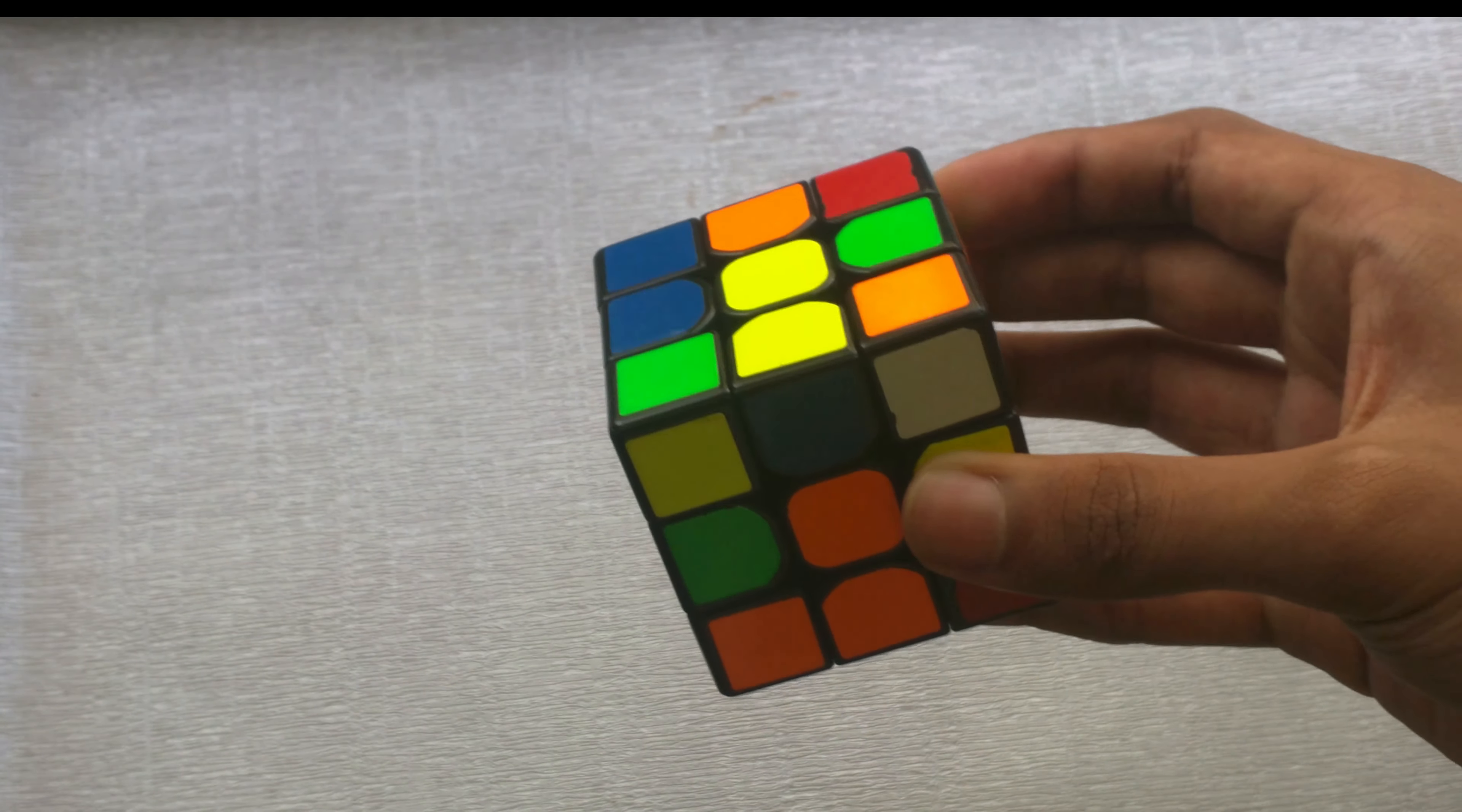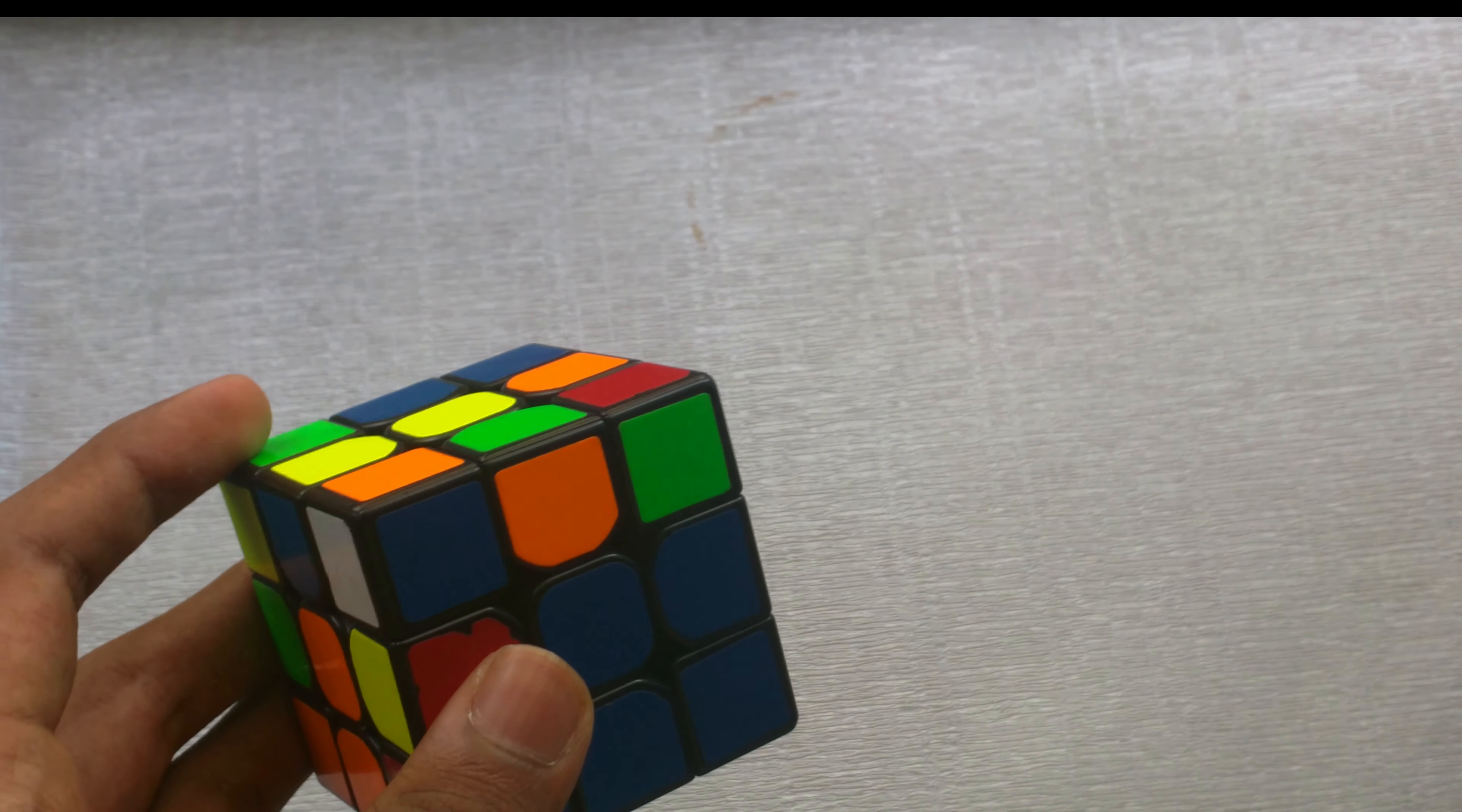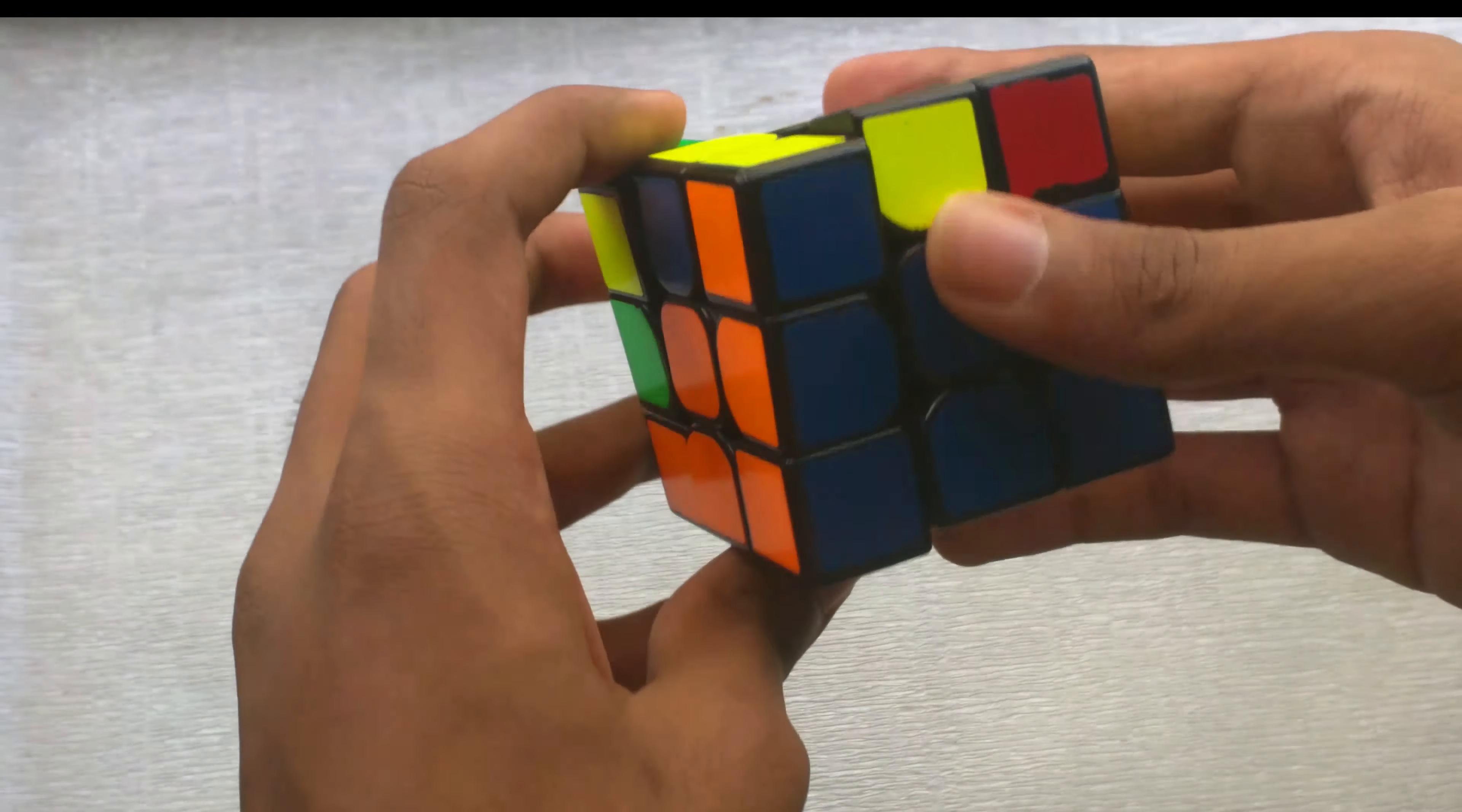If it's like this, then you can just hold it and put the corner above where it needs to go, with the white sticker on either the right or the left. And then you want to just move it up so it'll become a pair, move it into the slot, and then move it back down.